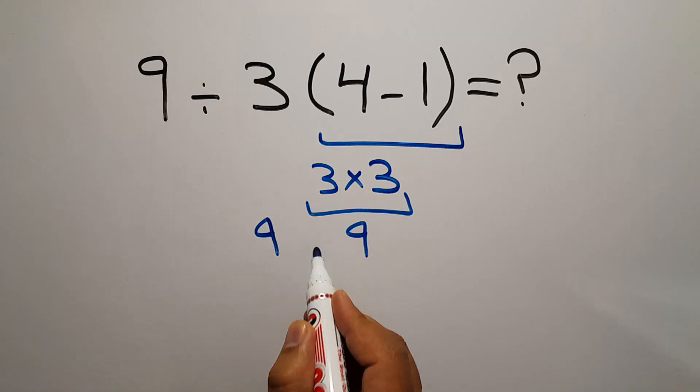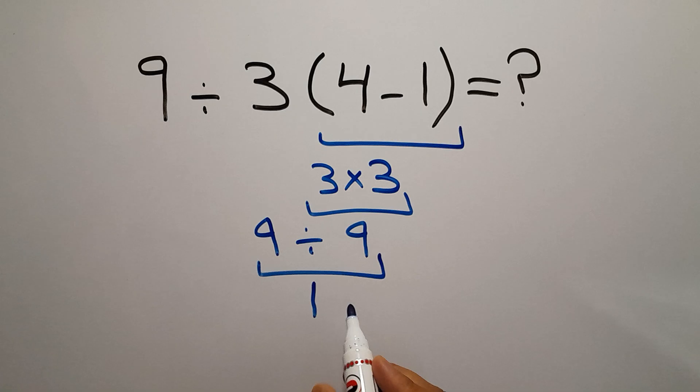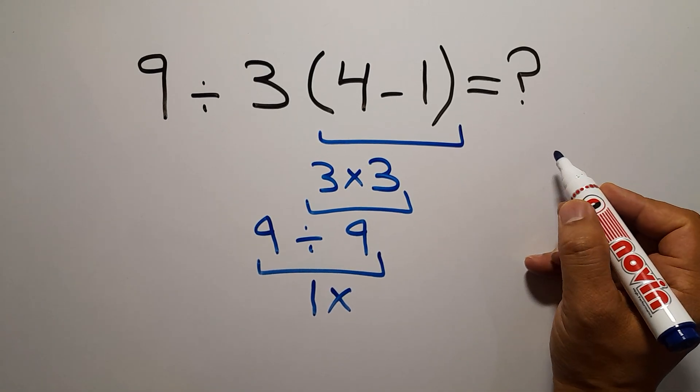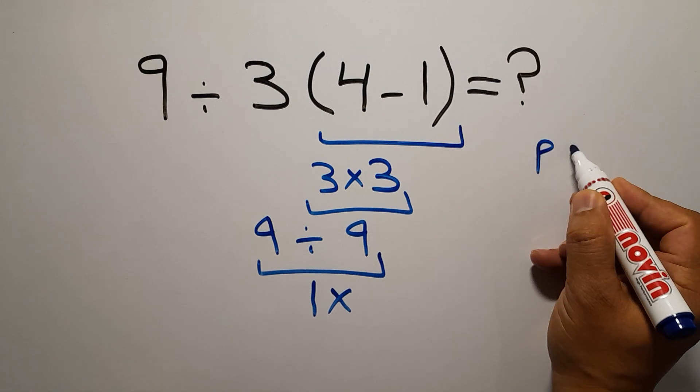So 9 divided by 9, which equals 1. But this answer is not correct because according to the order of operations, which is PEMDAS...